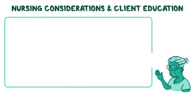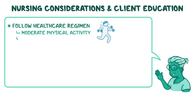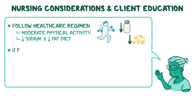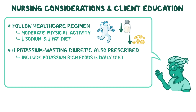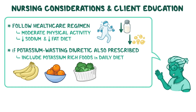Remind your client to closely follow their healthcare regimen, including moderate physical activity and a low-sodium and low-fat diet. If a potassium-wasting diuretic is also prescribed as part of their medication regimen, teach them to help maintain a normal potassium level by including some potassium-rich foods in their daily diet, such as bananas, oranges, broccoli, and potatoes.